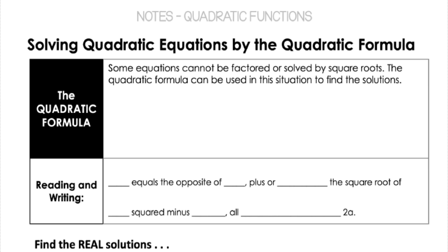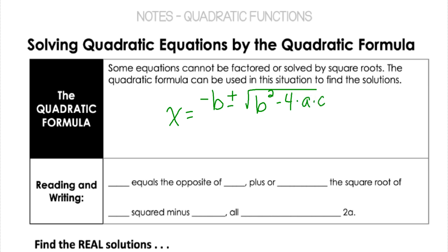In these situations, we can use the quadratic formula. To find our solutions for x, it's the opposite of the b value, plus or minus the square root of b squared minus 4 times a times c, all divided by 2 times a.